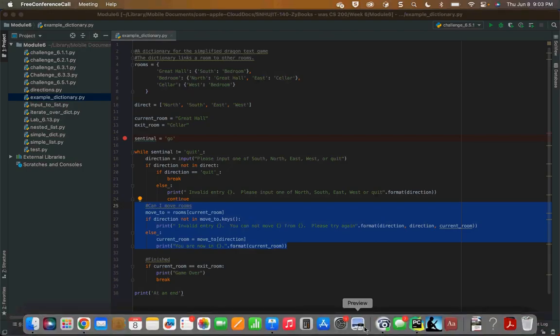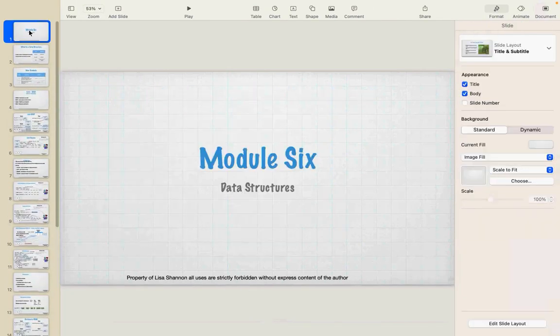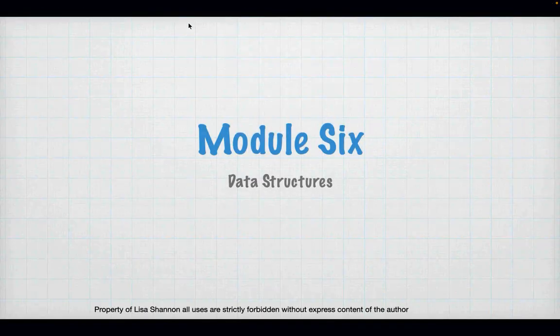This week we're going to talk about two things simultaneously: lists and dictionaries — data structures. We're also going to talk about the project, because data structures are the last piece of the puzzle you need to do the project appropriately. We're going to go through some example code. It's by no means everything you need for your project, but it covers some of the more difficult concepts.